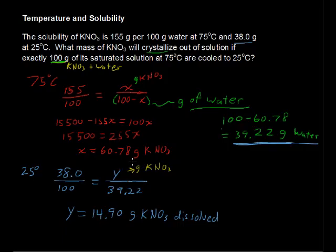Whereas we had 60.78 grams of the KNO3 originally dissolved. So, can you jump, can you make the leap? Here's what we're doing. How much will crystallize out? Well, if we had 60.78 grams at 75 degrees and we still had 14.9 grams dissolved in there at 25 degrees, then the difference of these two numbers, the difference of these, will give us the amount that crystallizes out.